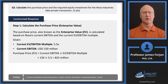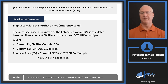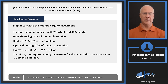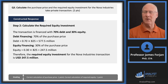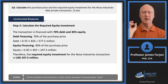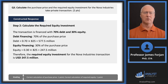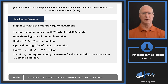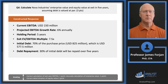Now let's compute the purchase price — sometimes called enterprise value — for Nova Industries. We're given current profitability of $150 million and a multiple of 5.5x. Multiply 150 by 5.5 to get $825 million. Then split that according to the capital structure: 70% debt gives $577 million, and 30% equity gives $247 million. So the required equity investment is $247 million.